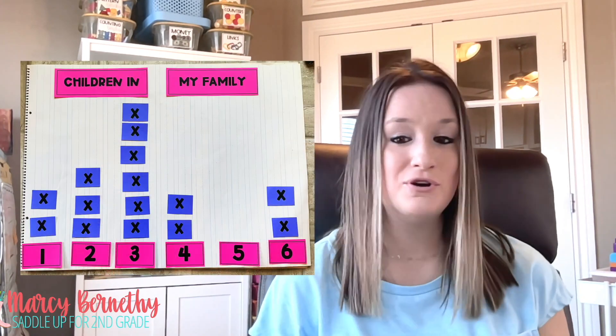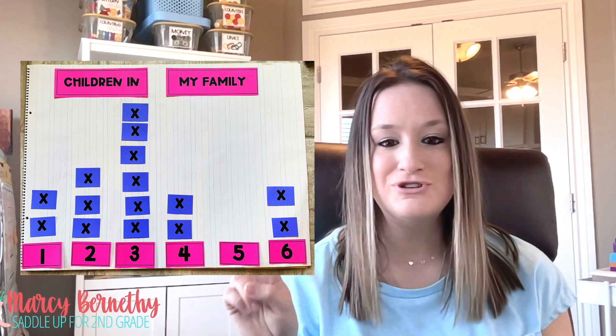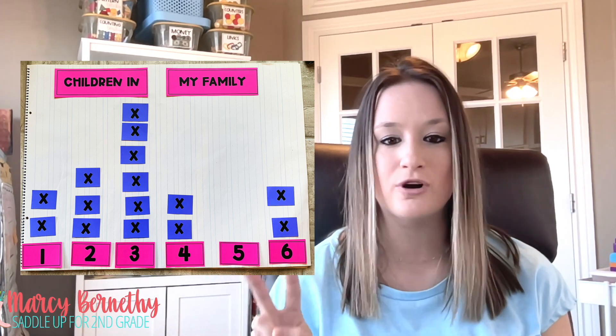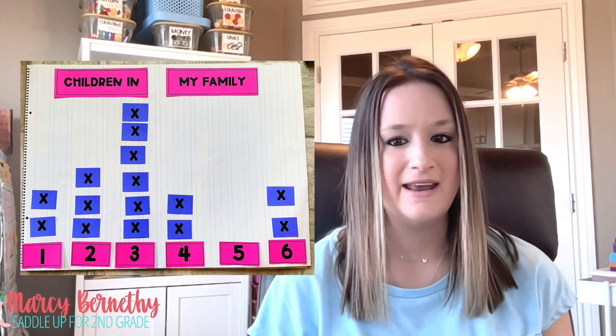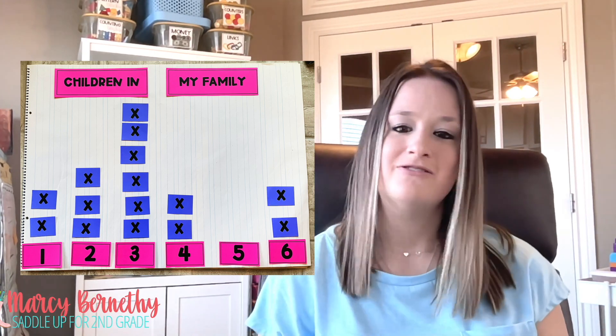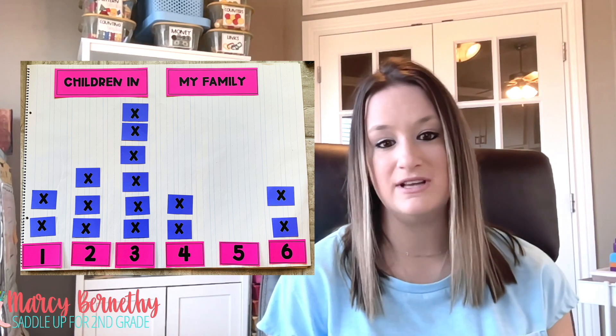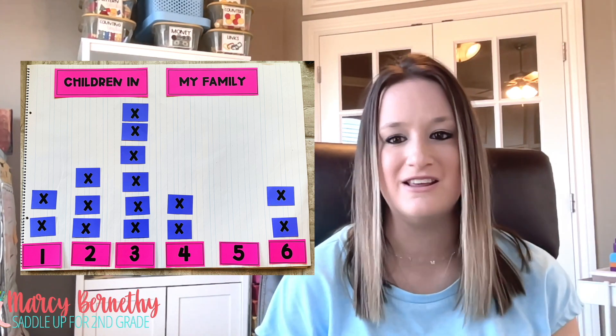After each child has plotted their answer, we would analyze the data together. Since there are two x's above four, that means two students in our class have four children in their family. Now how many x's are above the three? Six. This means that six students in our class have three children in their family.